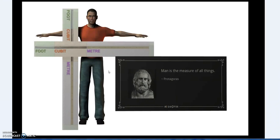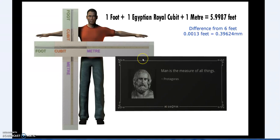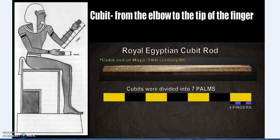As Protagoras famously said, man is the measure of all things — and this is seen in proportion throughout temples. Defining a man as roughly six feet, one foot plus one Egyptian royal cubit plus one meter equals 5.999 feet. That's a difference of about one quarter of a millimeter — basically the width of a human hair. It's a nice connection between the foot, the cubit, and the meter.